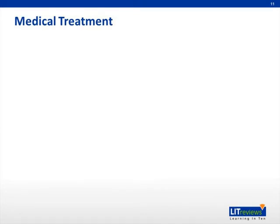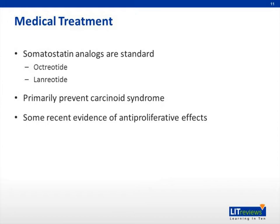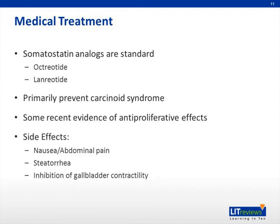Once the diagnosis of carcinoid has been made, treatment is of the essence. The first line of treatment is somatostatin analogues such as octreotide, which is the most commonly used; another example is lanreotide. These agents are useful in helping to prevent carcinoid syndrome and in some cases have been shown to have anti-proliferative effects on the malignancy. While these medications are useful for symptoms, they can also cause side effects including nausea, abdominal pain, steatorrhea, and inhibition of gallbladder contractility.